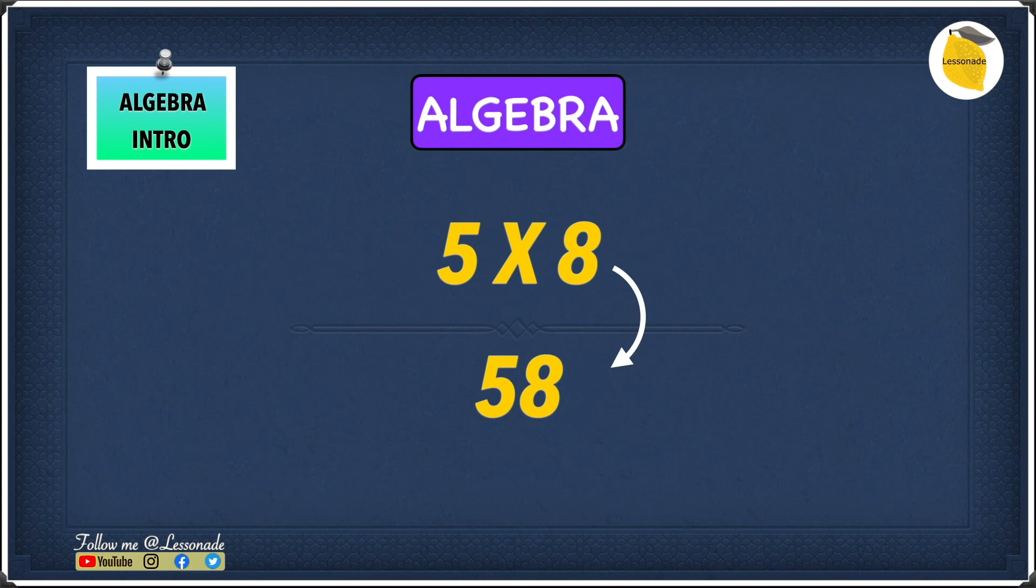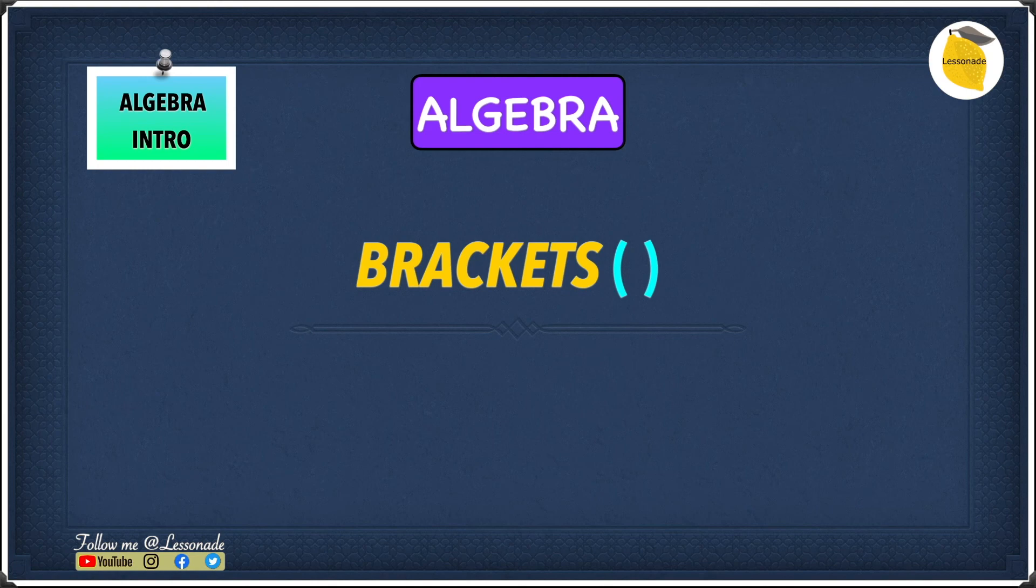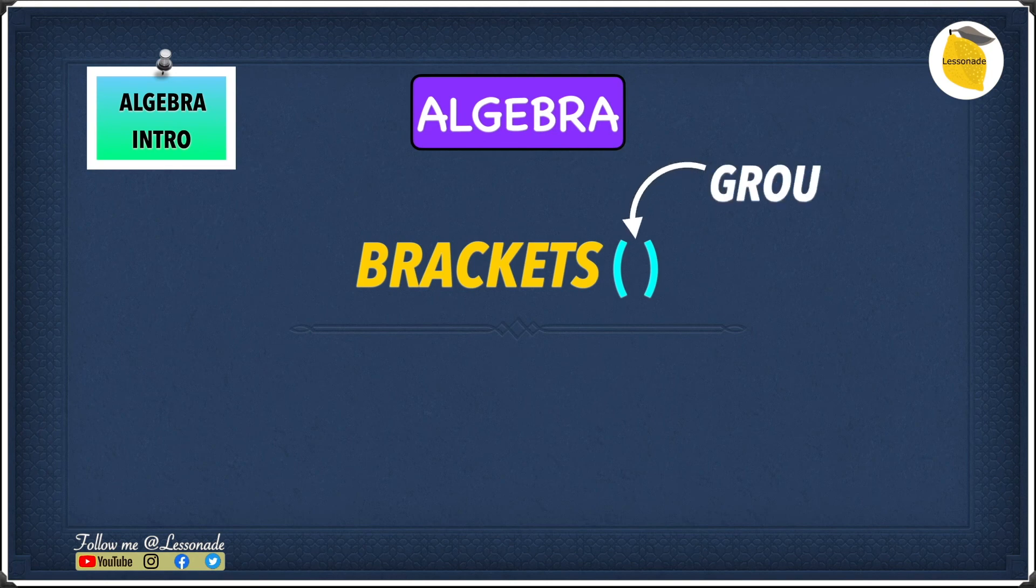But one way you can multiply numbers with no multiplication is by using brackets. And you may be wondering why, because we're using brackets and bracket has nothing to do with multiplication. Well, this is because everything inside a bracket is grouped.